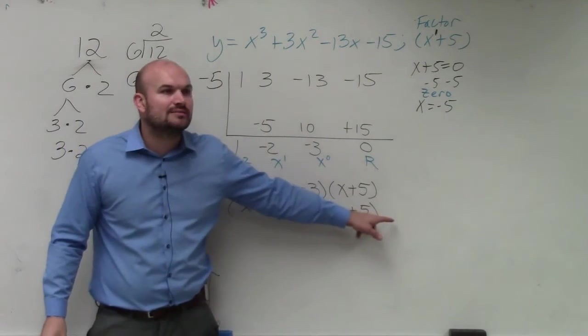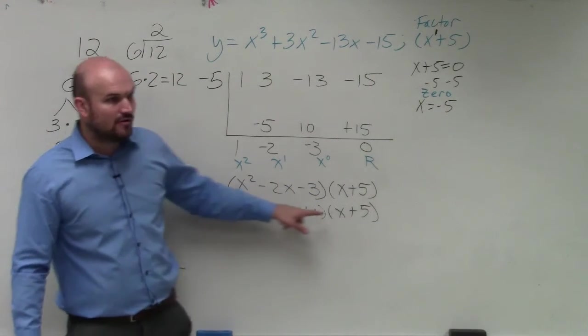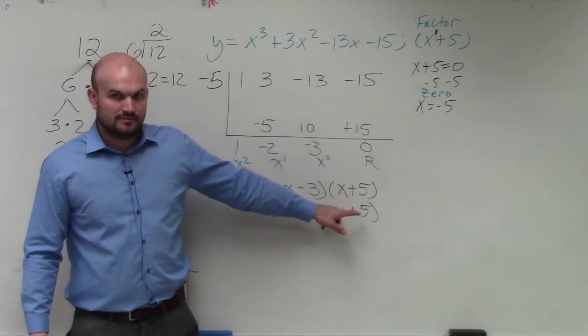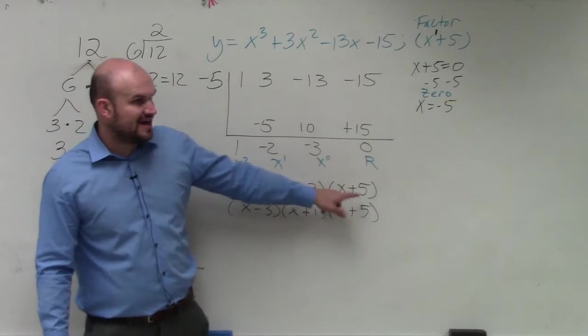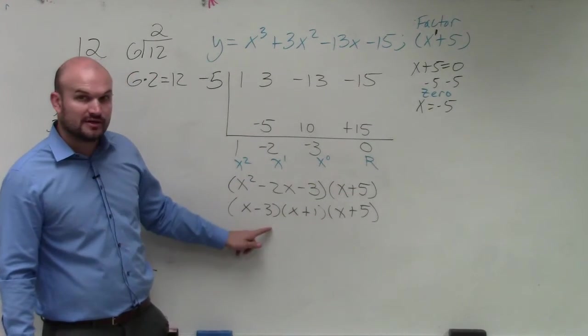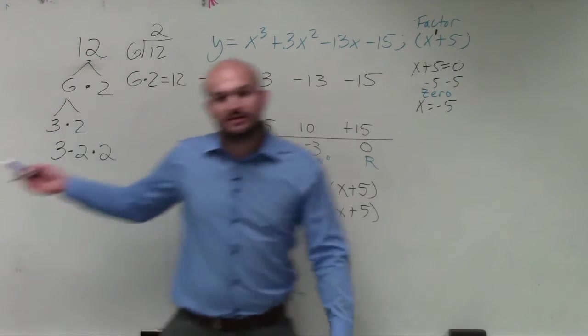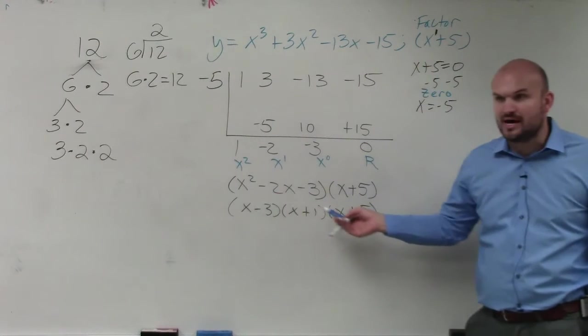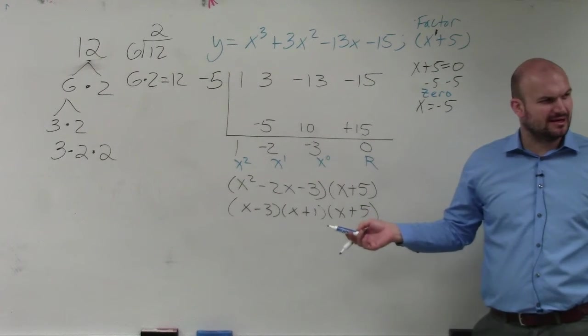That is what we call the completely factored form. All I did was take my two factors and I factored this further, just like I did with the number. Instead of numbers, we're using polynomials. Does everybody see that? Anybody have any questions?